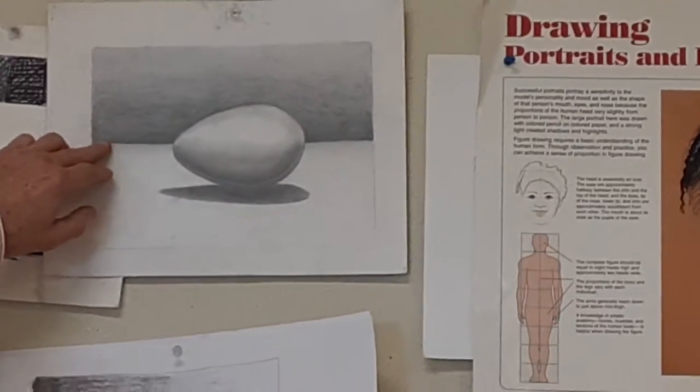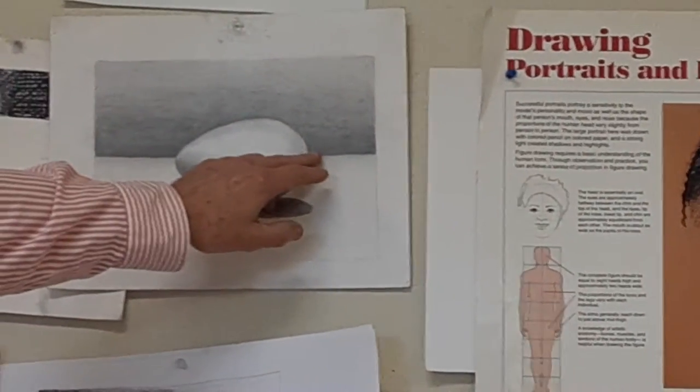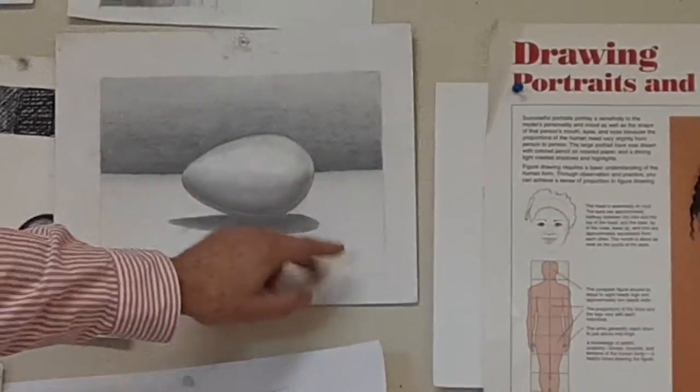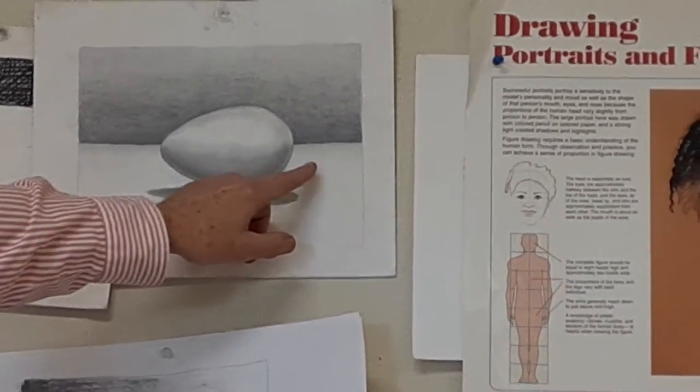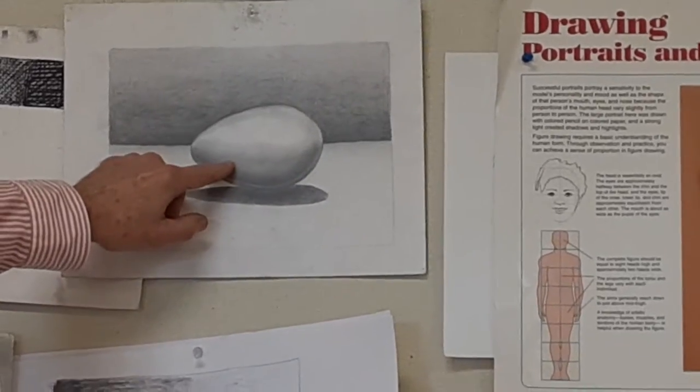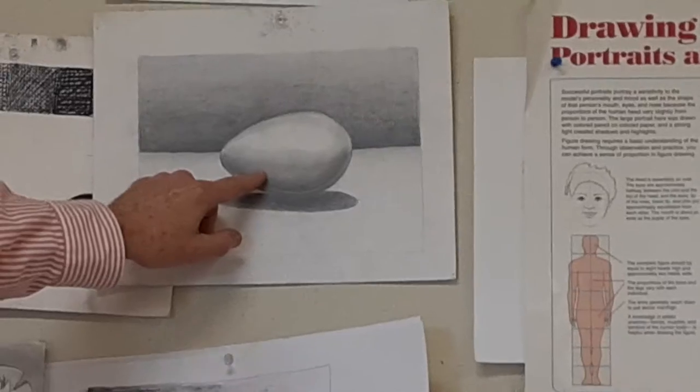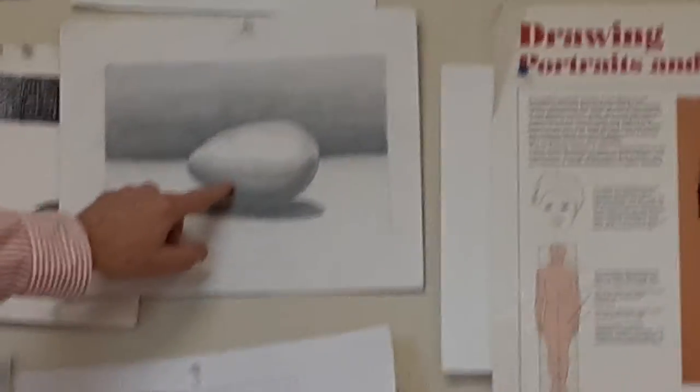Over here, I have a simple shape, an egg. Notice I have a horizon line, and I'm using gradation and tone, going from dark to light, and then a dark to light. There is a tone here, it's very light. From there, I'm trying to model out my egg to make it seem like it is an object in space that has a volume.